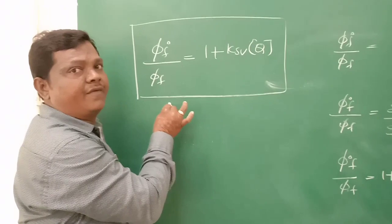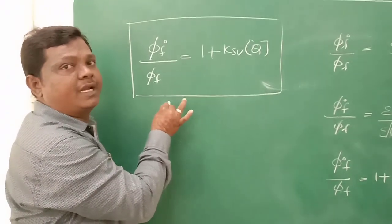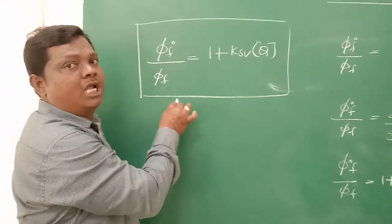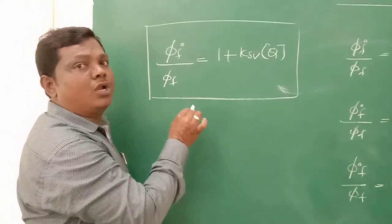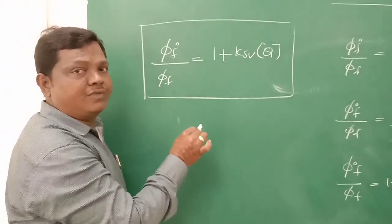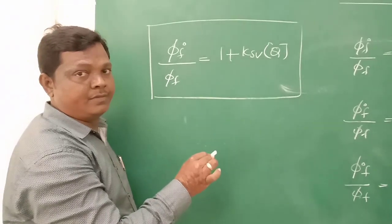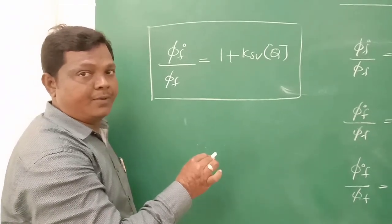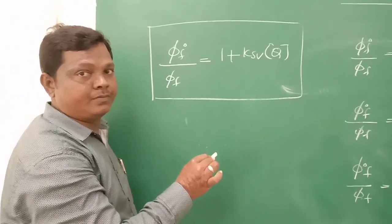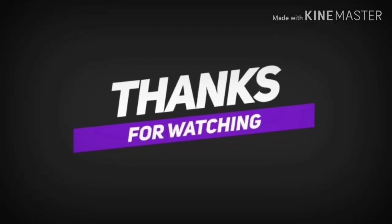The Stern-Volmer equation gives the relationship for intermolecular deactivation of fluorescence. Thank you.